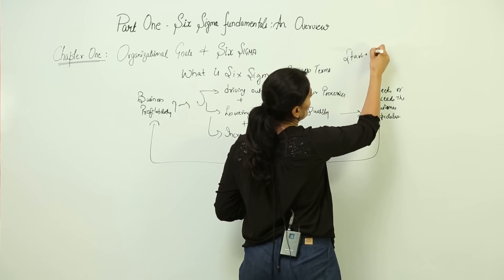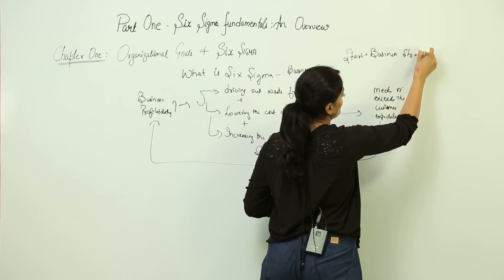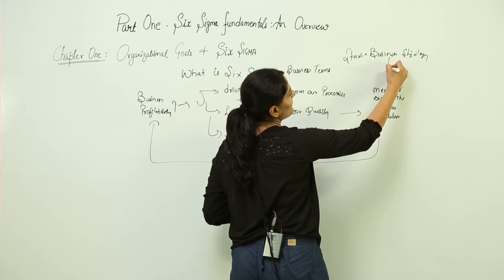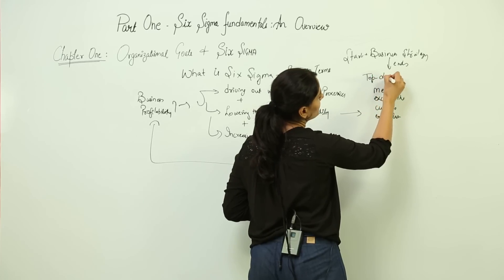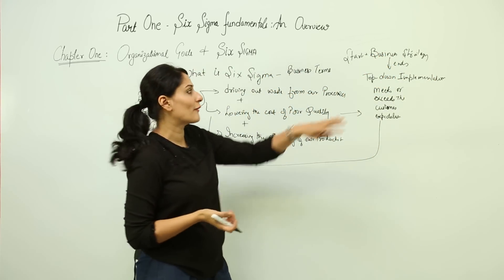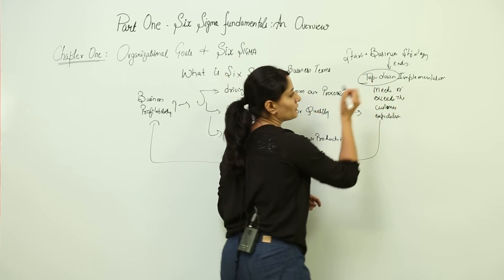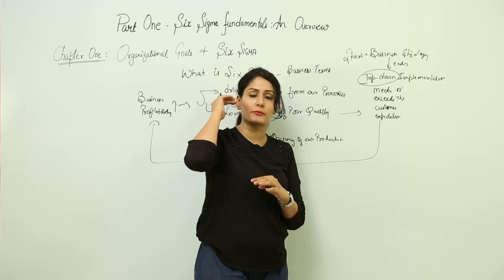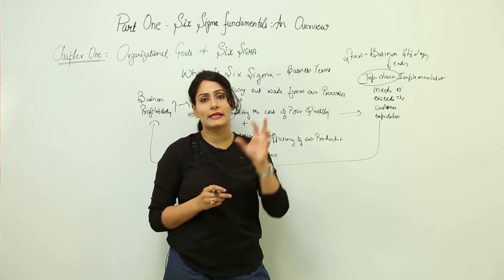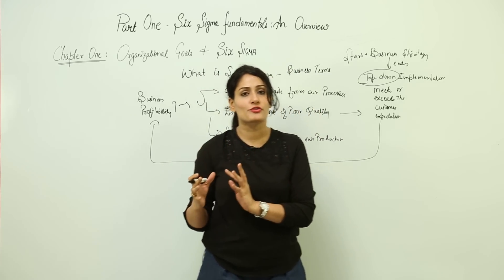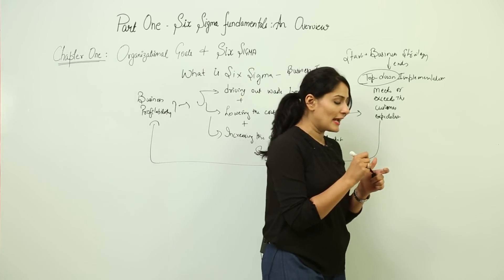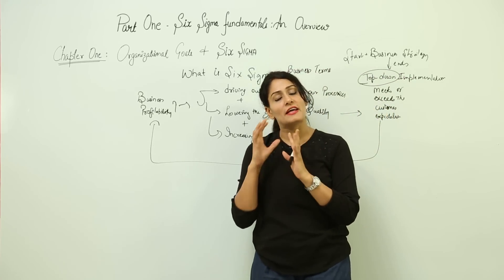Six Sigma starts with a business strategy and ends with top-down implementation — meaning all people from top leadership to lower ranks must participate. The role of top leadership is critical; if leaders are not enthusiastic or well-educated about this technique, it is doomed to fail. Six Sigma is not a hypothetical approach — it is a very methodological and scientific approach.